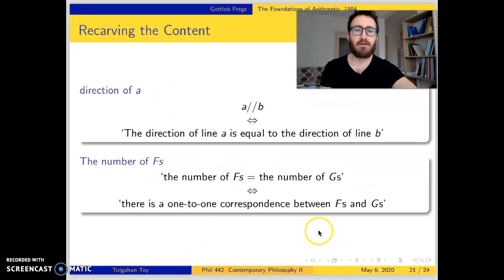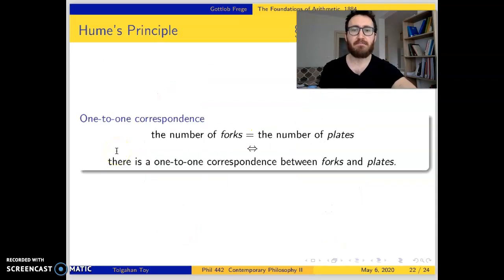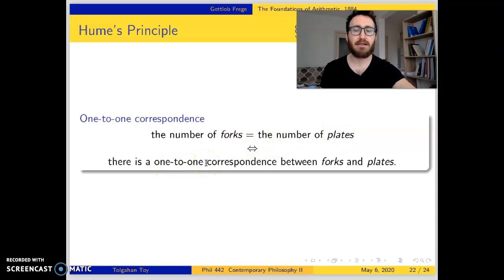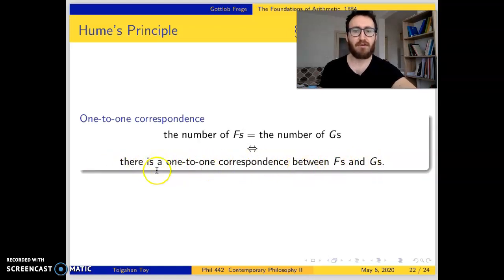This whole biconditional is called Hume's principle. For David Hume, identity between two numbers is nothing but one-to-one correspondence between two sets of objects. The number of forks is identical to the number of plates if and only if there is a one-to-one correspondence between forks and plates. In general: the number of F's is identical to the number of G's if and only if there is a one-to-one correspondence between F's and G's.